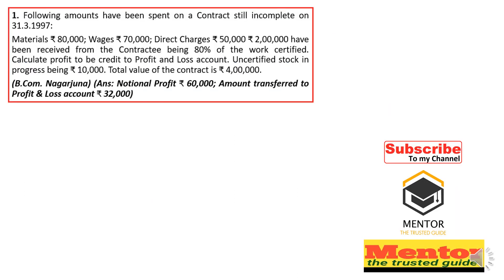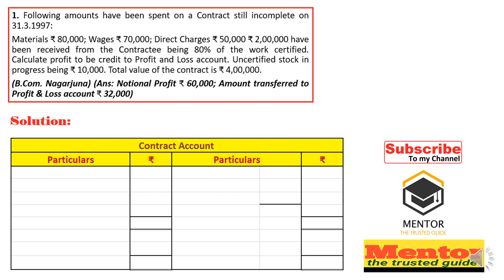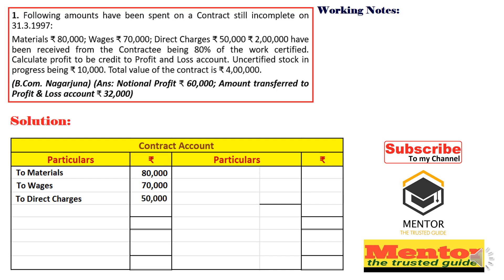Let's take up the first long question. We are given material, wages, direct charges; two lakhs received from the contractee being 80% of the work certified; uncertified work in progress of ten thousand; and total contract price of four lakhs. In the contract account, material (80,000), wages (70,000), and direct charges (50,000) are written on the debit side.